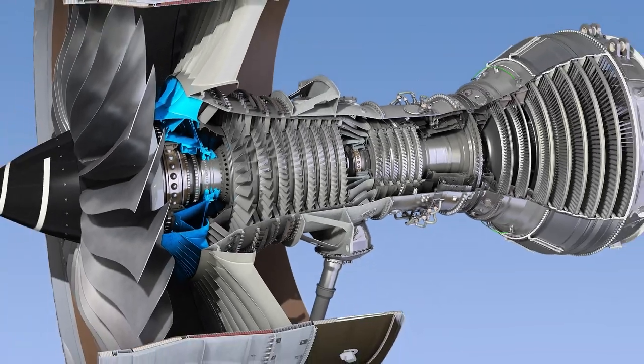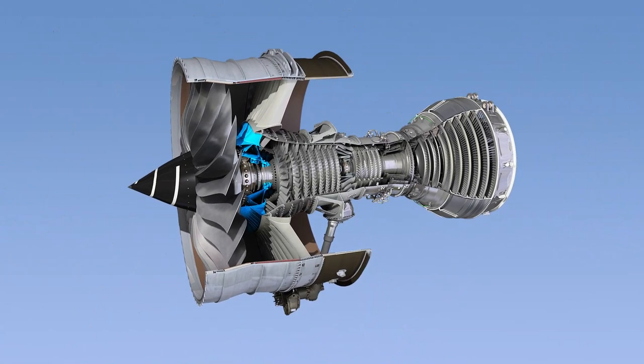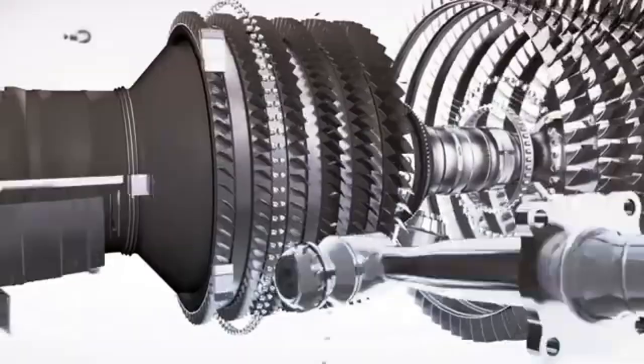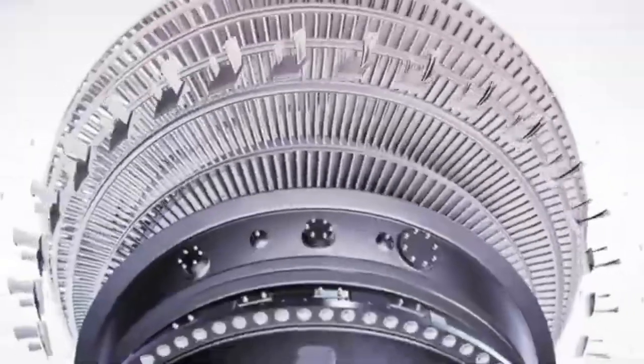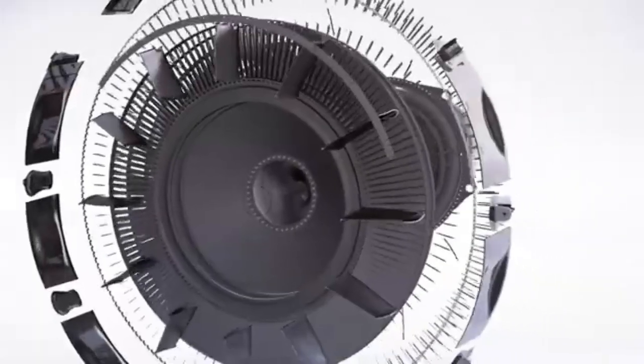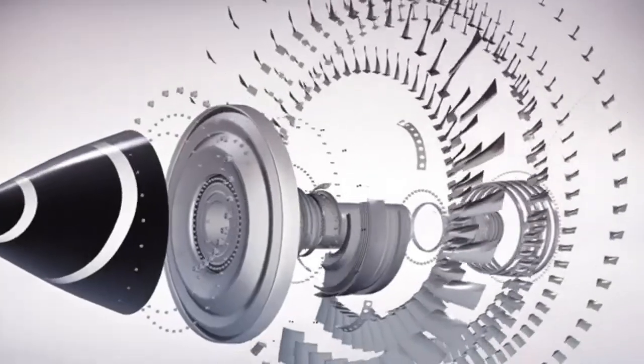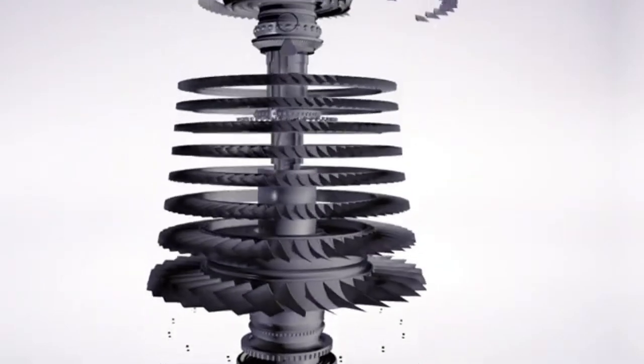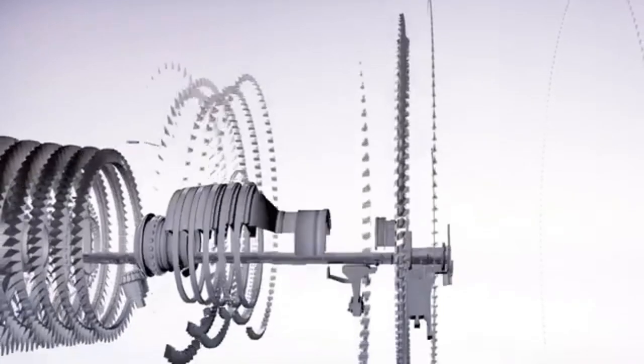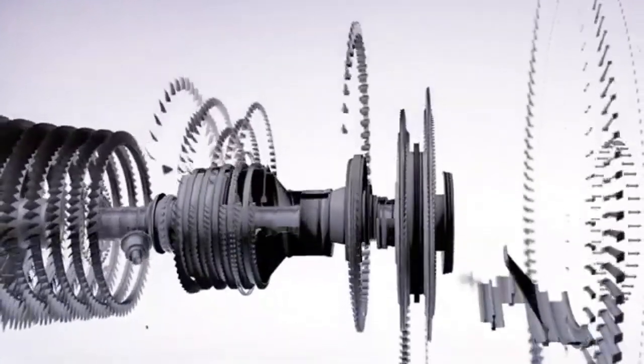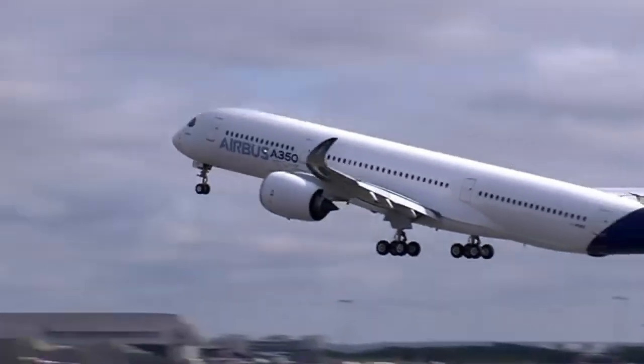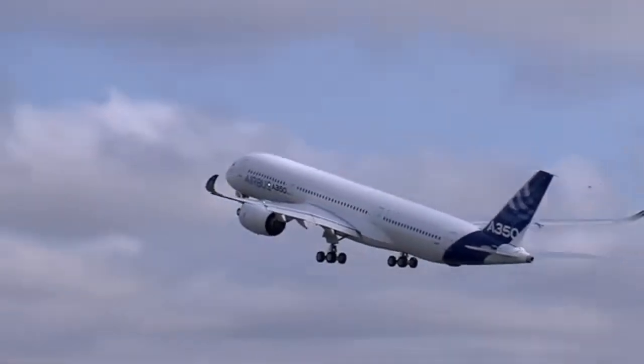Next, we have the Rolls-Royce Trent XWB, which powers the Airbus A350. This engine is renowned for its fuel efficiency and low emissions, thanks to its advanced materials and innovative blade design. The Trent XWB's high bypass ratio and cutting-edge technology make it one of the most efficient engines in its class. The Trent XWB features a 118-inch fan diameter and state-of-the-art fan blade technology. Its modular design allows for easy maintenance and upgrades, keeping the engine at the cutting edge of performance throughout its lifespan.